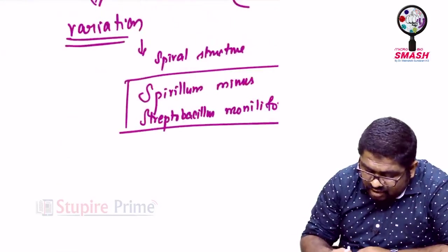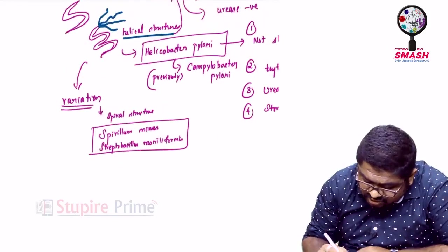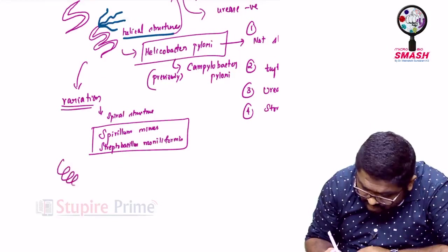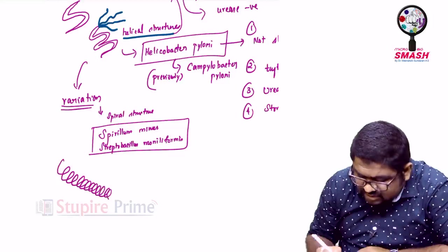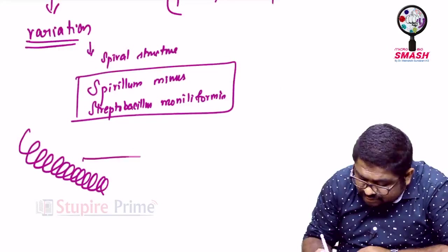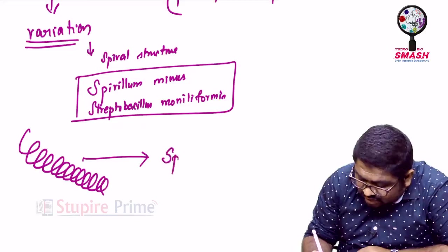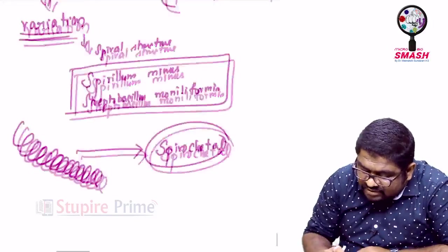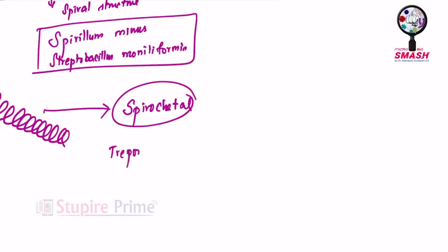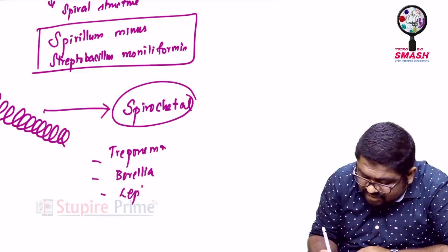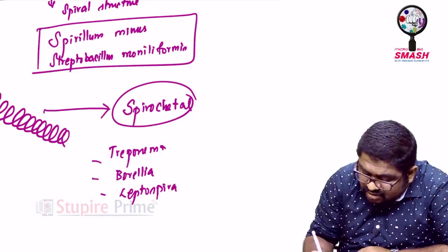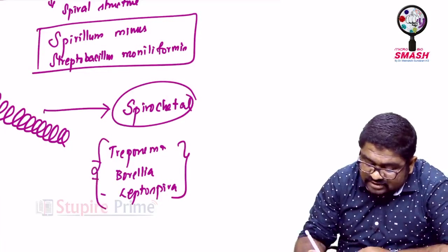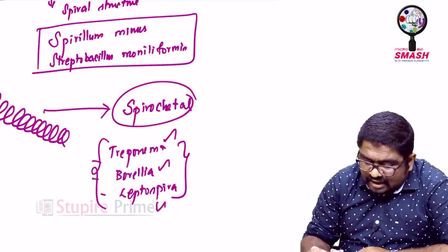Okay. You go one step forward. If that particular Spiral Structure is not stopping here, it keeps on going like this and they are tightly bound, then these are not called as Spiral anymore. These are called as Spirochetal. That would mean to say the Spirochete organisms like Treponema can be seen, Borrelia can be seen, Leptospira can be seen. So, remember three major organisms under Spirochetes are Treponema, Borrelia and Leptospira.